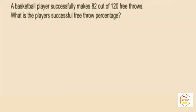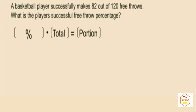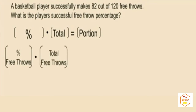A basketball player successfully makes 82 out of 120 free throws. What is the player's successful free throw percentage? In this problem, we're trying to find the percent. The percent represents the percent of free throws successfully made, the total is the total free throws attempted, and the portion is the successful free throws.